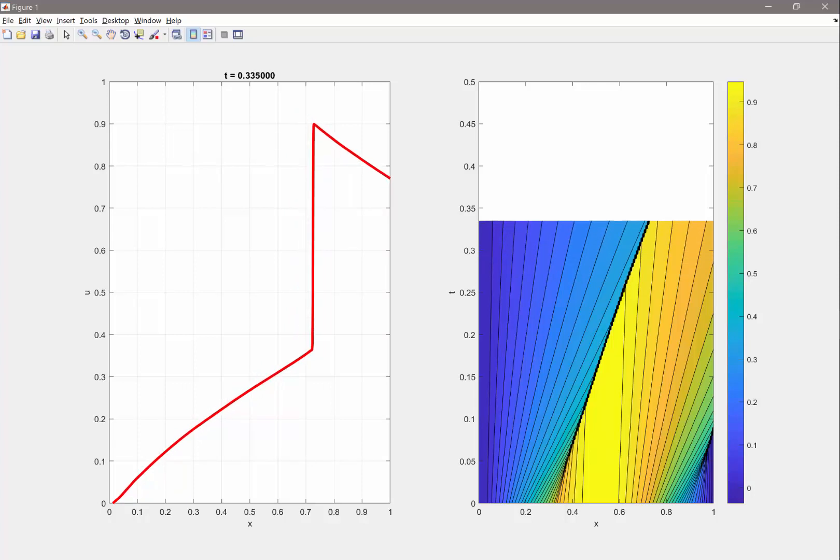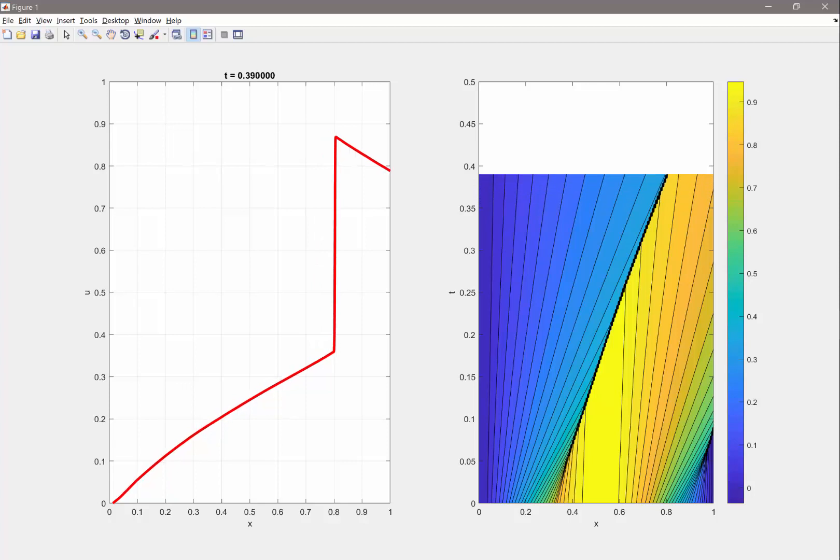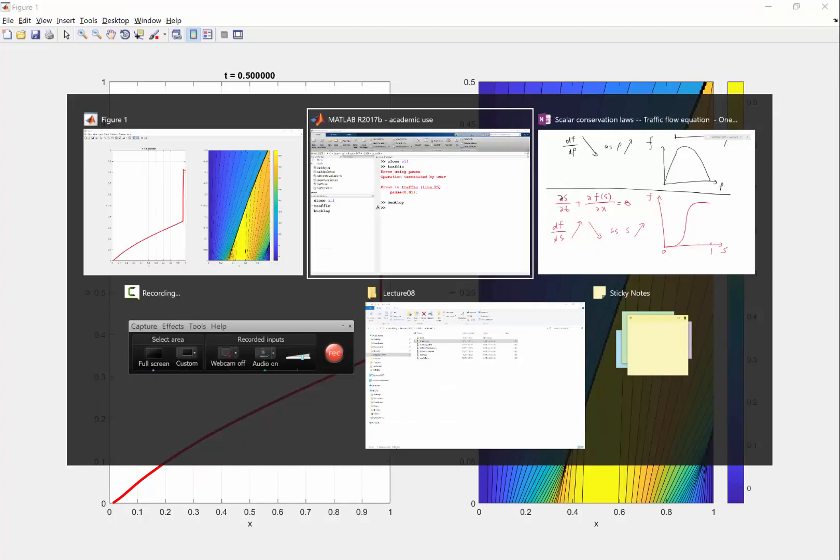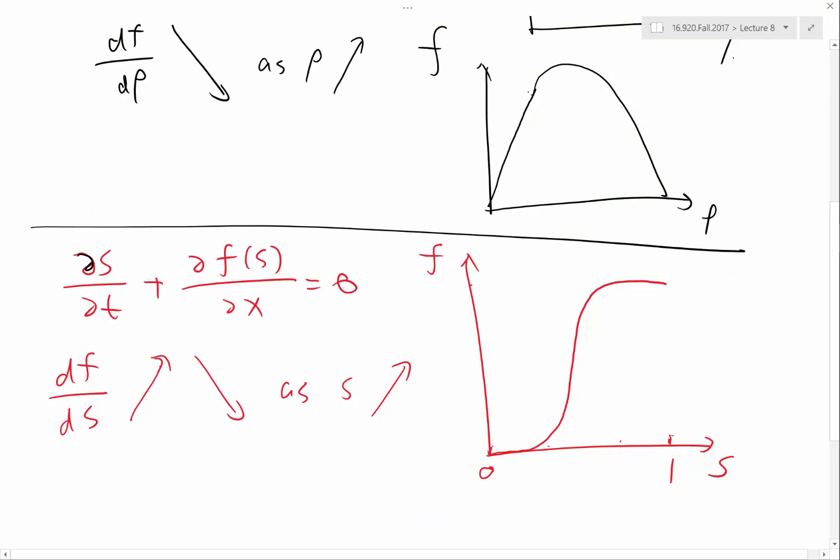And it can only start when the characteristic starts to bump into each other, when the characteristic speed on the left is higher than the characteristic speed on the right. So we can see that this kind of behavior becomes quite interesting when we have some part of the flux function being concave, some part of the flux function being convex. And this has important consequences when we look at the behavior of a discontinuity.